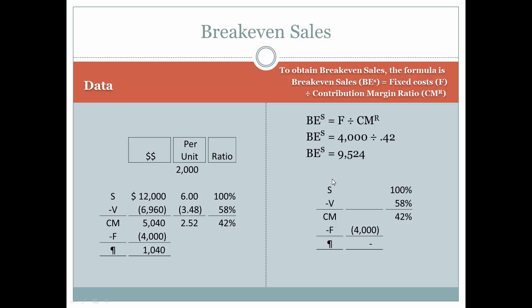Break-even sales will then be $9,524. Let's prove that we're going to break even — that we're going to cover our fixed expenses and have zero profit, meaning that we break even and are able to stay in business one more month, and hopefully increase our sales to get beyond break-even. This is like the ground-zero scenario, but each company needs to do this because they need to know what they need to make in order to just stay in business.